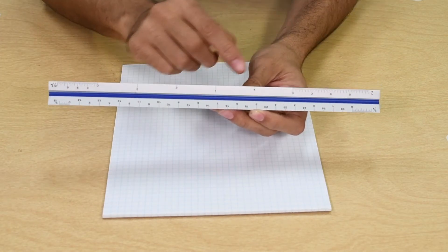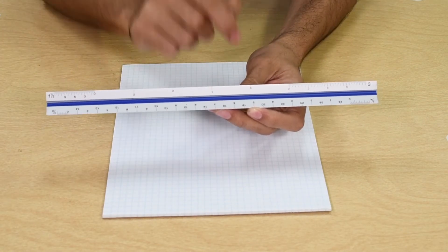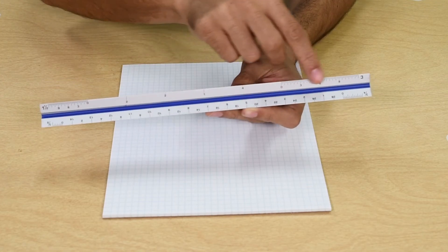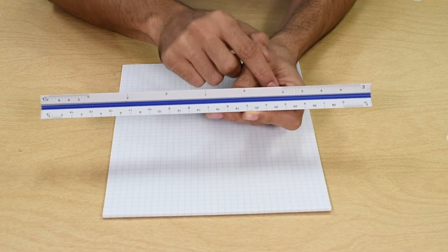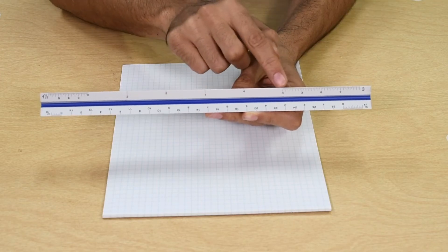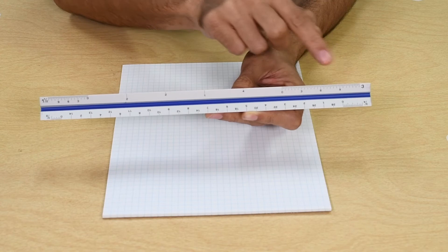You also notice the small graduations before the number zero. These represent 12 inches within that scale. You can use this side to measure the number of inches. You use the numbers written after zero to measure the number of feet.